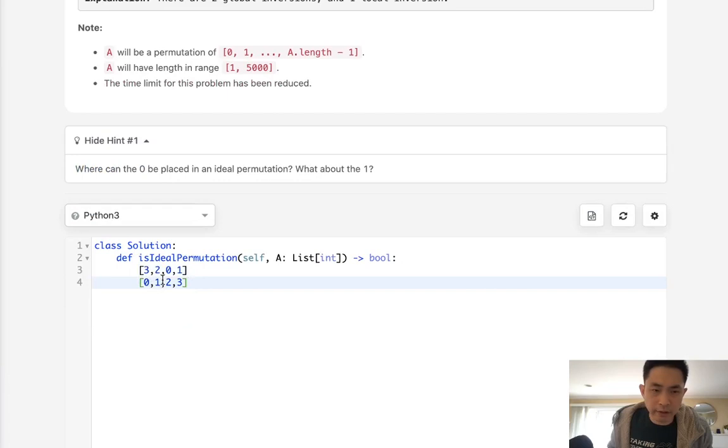And to kind of figure that out what we would do essentially is use this number here and just check to see if the difference between the two is greater than one or not. See with three we know that we can't have a number bigger than one otherwise it's going to have more global inversions.